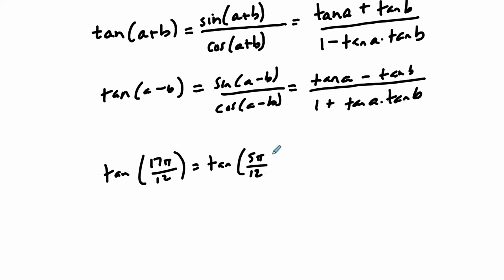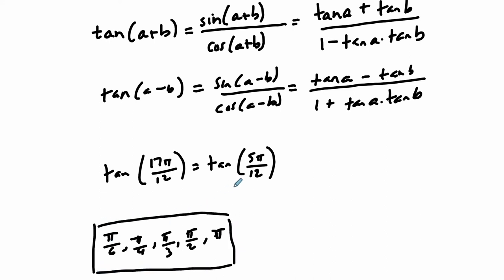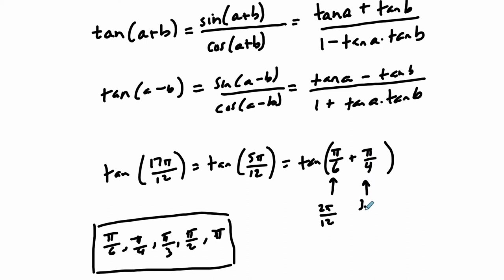There's usually some way to use landmark angles: π/6, π/4, π/3, π/2, and π. These landmarks can help us break down 5π over 12. So: π/6 is 2π over 12, plus π/4 which is 3π over 12 - put them together and that's 5π over 12, which is exactly what we're looking for. Now we can solve this.